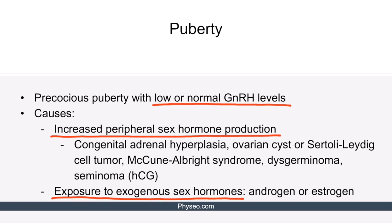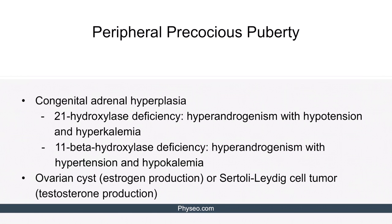Exposure to exogenous sex hormones can include either androgen or estrogen. Patients may be exposed to these, for example, with oral contraceptive pills, hormonal creams, or other medications. Of all the types of congenital adrenal hyperplasia, the two to keep in mind with regards to peripheral precocious puberty are 21-hydroxylase deficiency and 11-beta-hydroxylase deficiency.